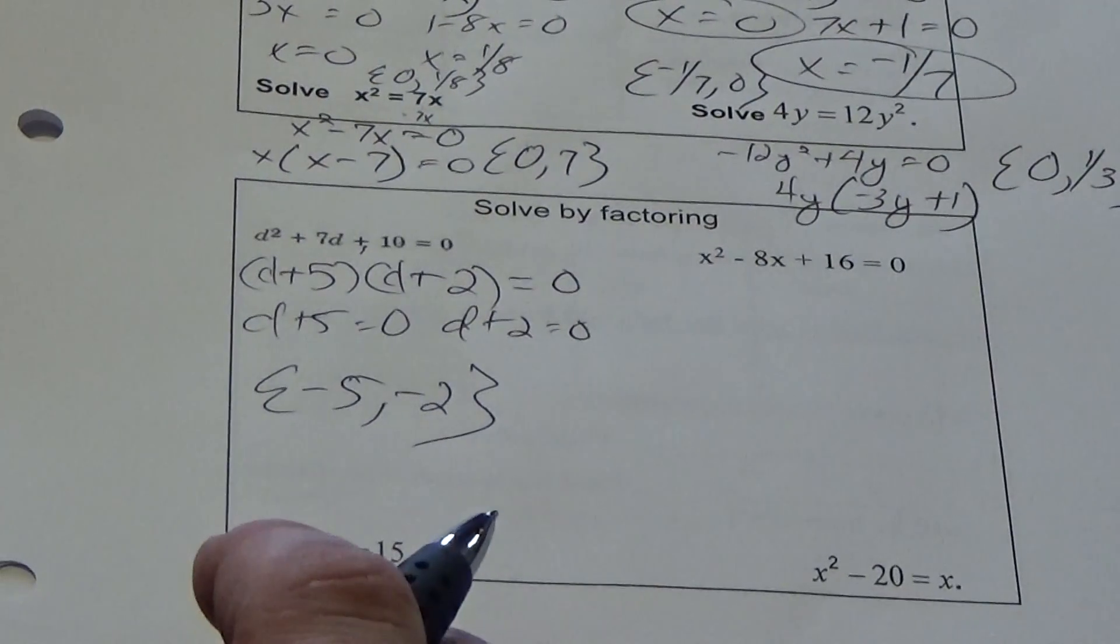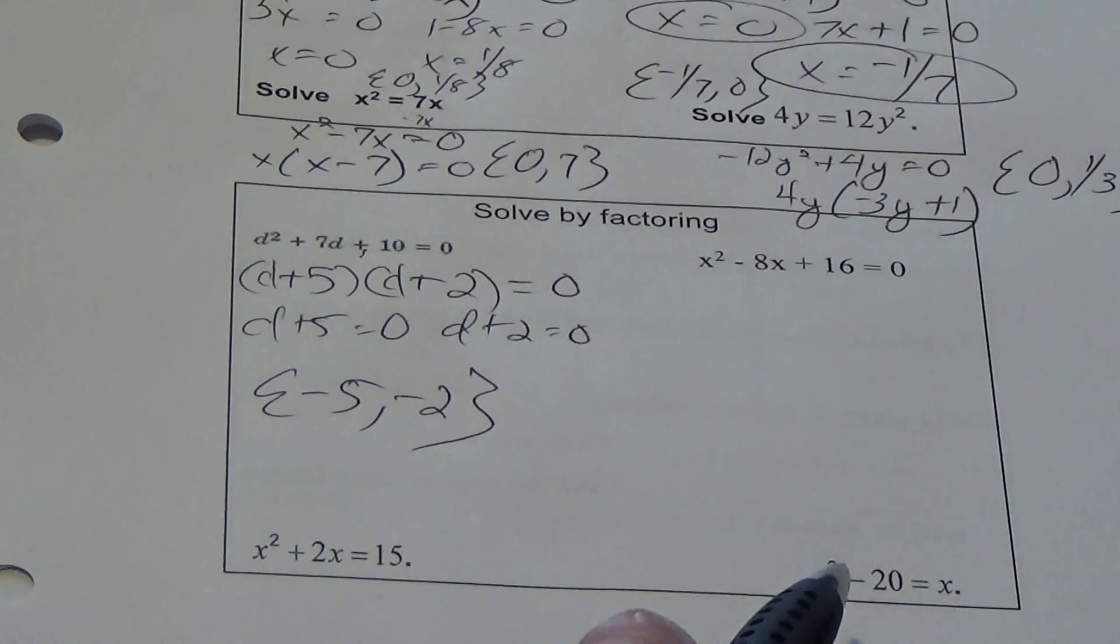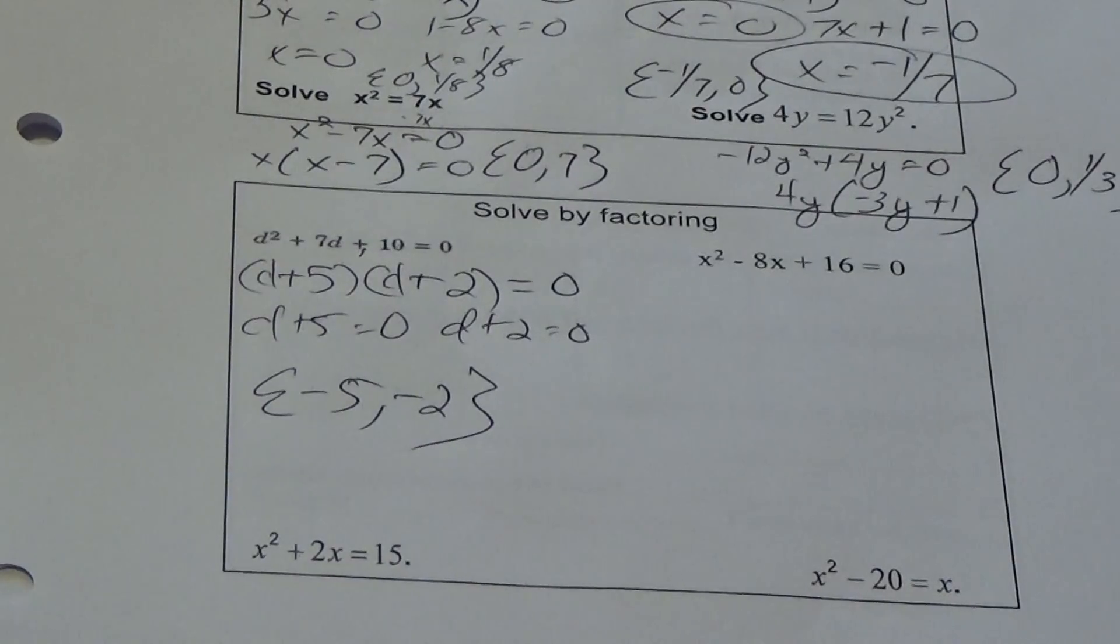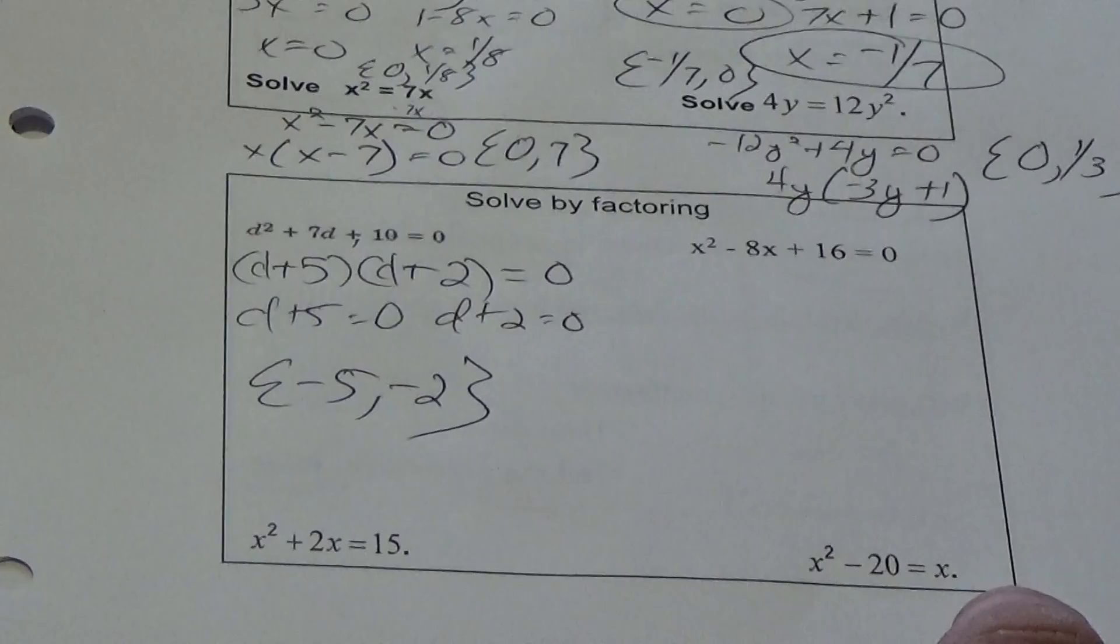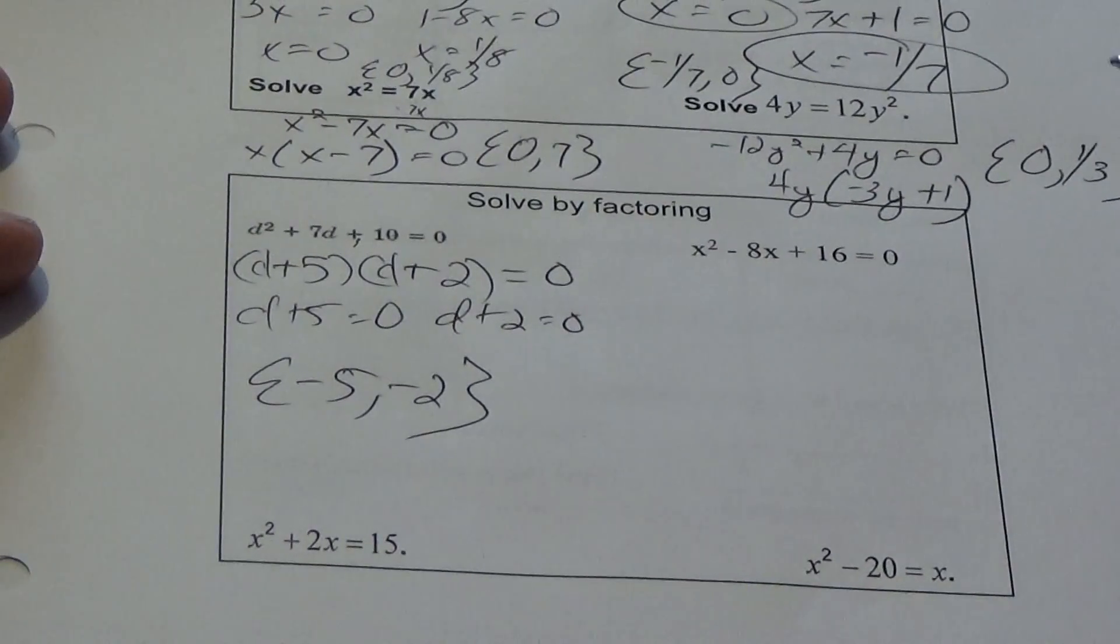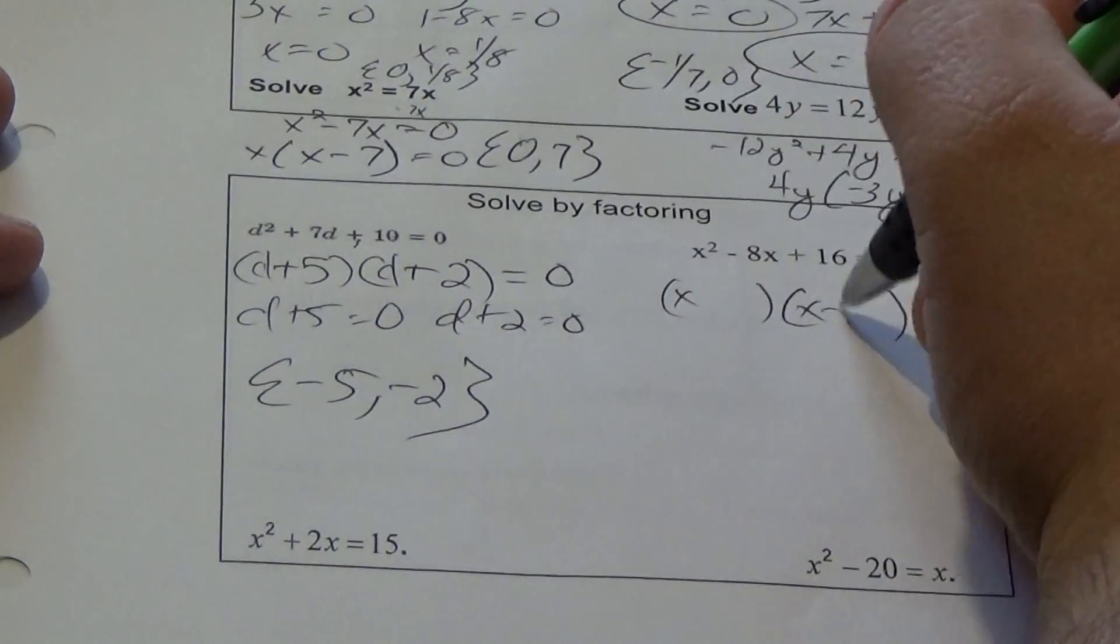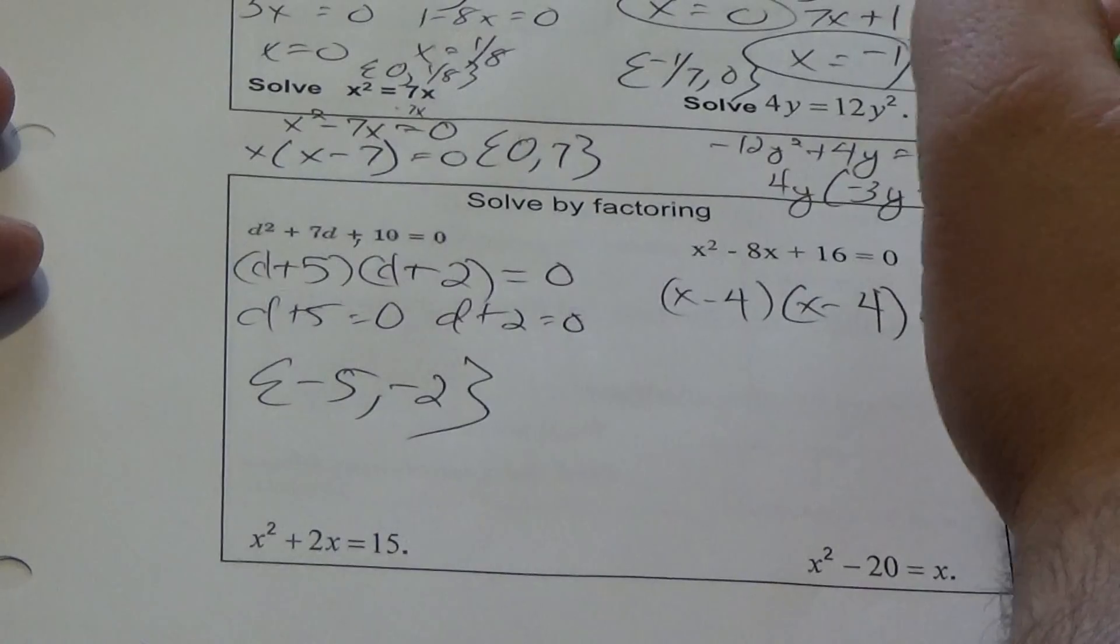Go ahead and finish these three now. Remember, before you can move forward, it has to be equal to 0. Pause the video, try those three, and then once you've done it, check the video, watch me do the work, and you'll know whether or not you're doing it right.